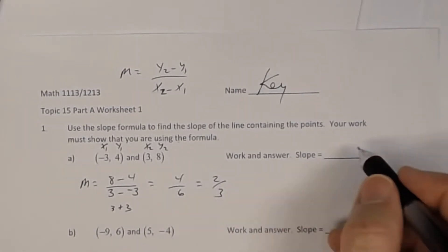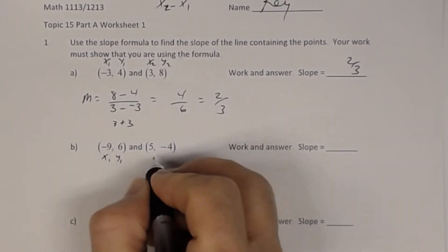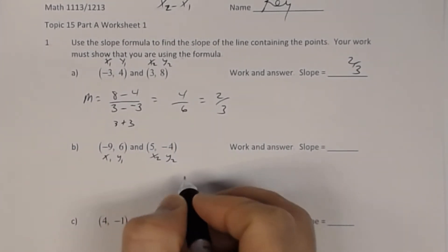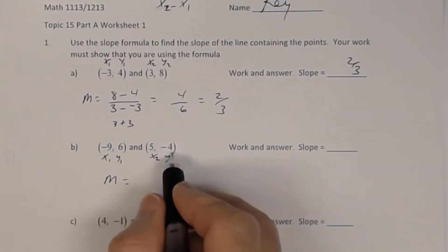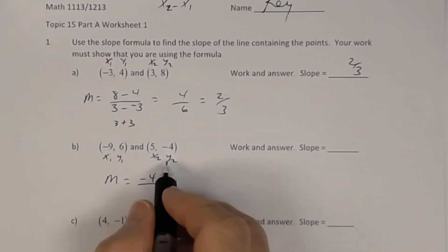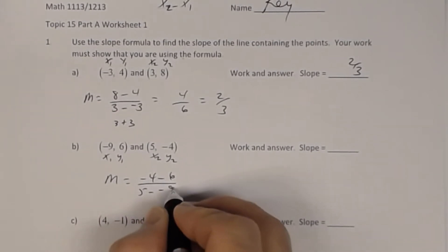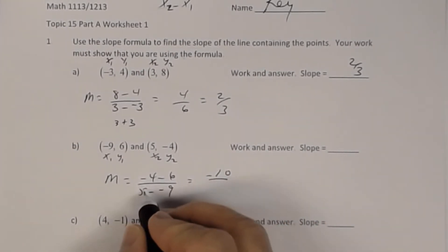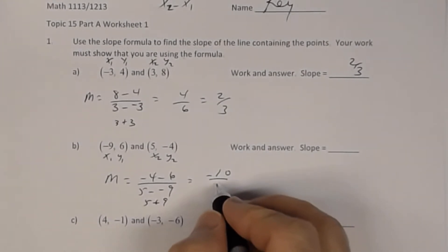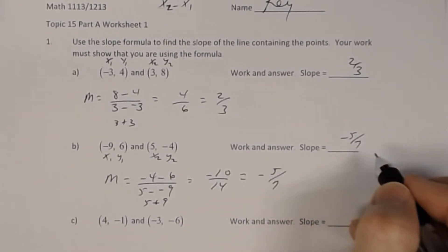Part B, do the same thing: x1, y1, x2, y2. Substituting, we get slope equals negative 4 subtract 6 divided by 5 subtract negative 9. Negative 4 and negative 6 is negative 10. 5 subtract negative 9 means 5 plus 9, which is 14. Reducing, I get negative 5/7.